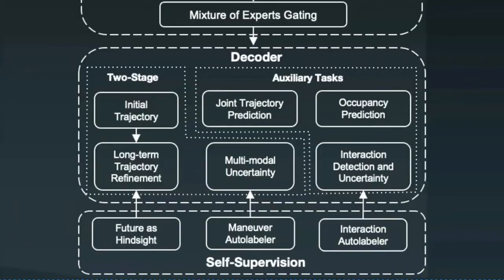The second part of the decoder consists of various auxiliary tasks. For example, to model interactions between multiple agents, it predicts joint trajectories, the existence, and the resolution of interactions. To model the longer-term road geometry and context better, it also predicts the occupancy maps at each future timestamp.